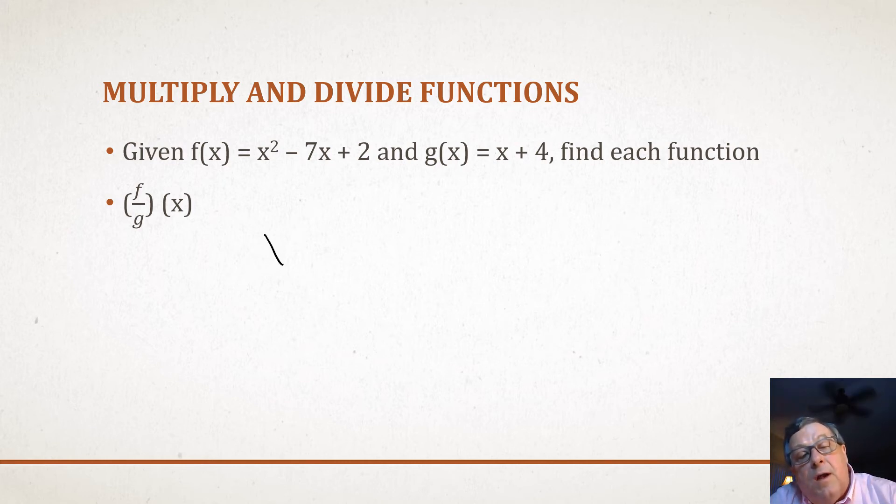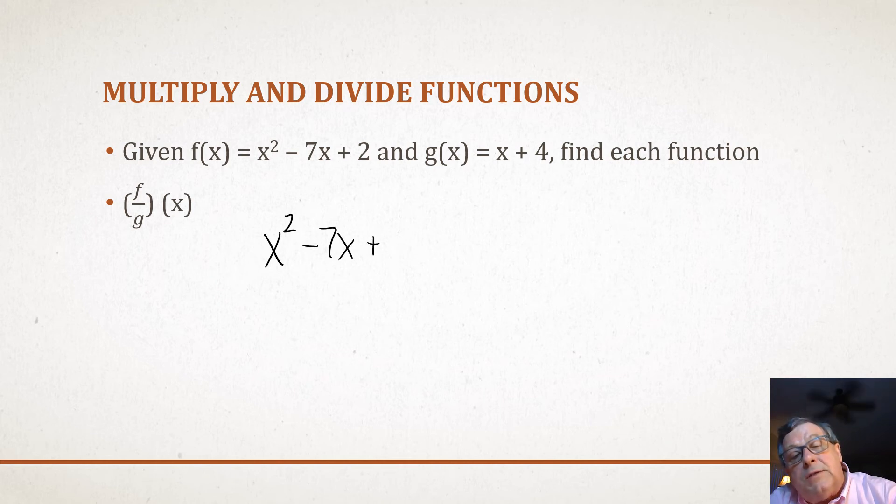We've got f divided by g. So we've got x² - 7x + 2 divided by x + 4.